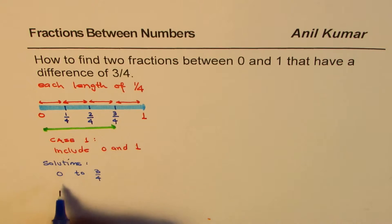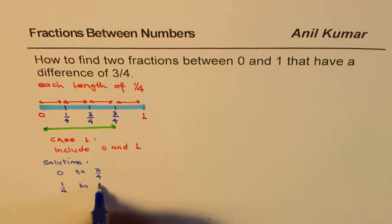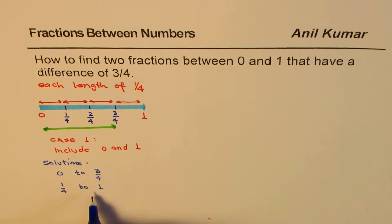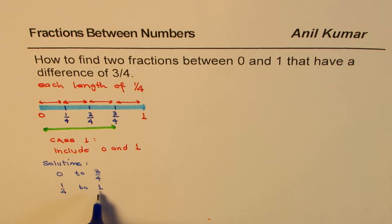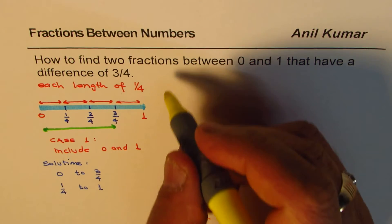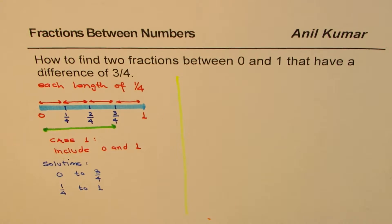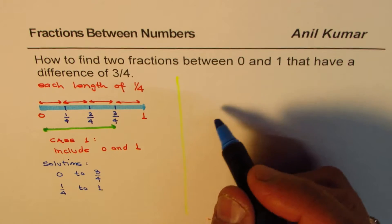We could also say from 1 fourth to 1. That is also fractions — remember 0 and 1 are also fractions. So that could be two solutions right there. Now let's look into another case where the endpoints are not included.